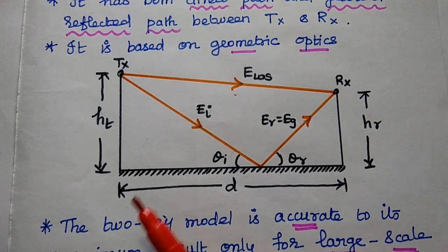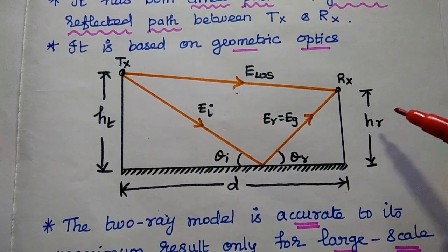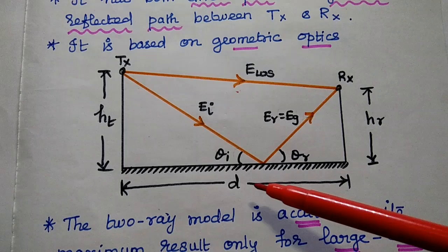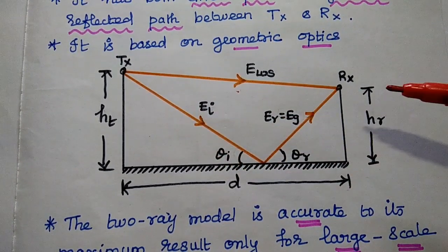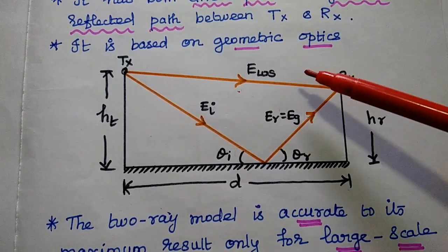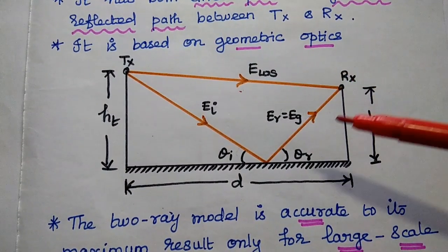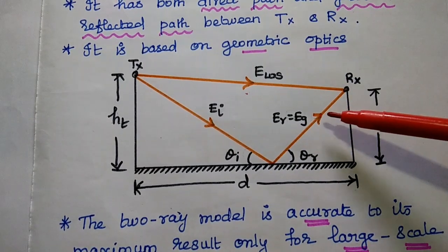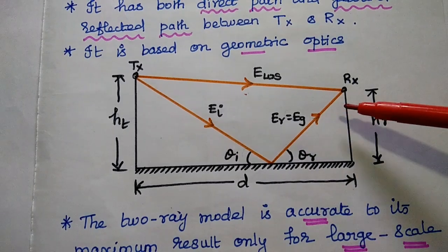Here we consider the transmitter with a height HT, the receiver with a height HR, and the distance between the transmitter and receiver is D. When the signal propagates from the transmitter to the receiver, we can have two paths: one is the line-of-sight path, that is the direct path, and the next one is the ground reflected path. That's why it is called the 2-ray propagation model or ground reflection model.